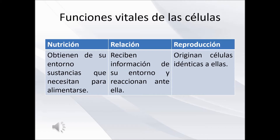A pesar de su tamaño microscópico, las células realizan tres funciones vitales. La primera: nutrición. Obtienen de su entorno las sustancias que necesitan para alimentarse. Por ejemplo, las células de nuestro organismo consiguen estas sustancias de la sangre. Relación: reciben información de su entorno y reaccionan ante ella. Por ejemplo, las células que forman el tejido muscular pueden contraerse al recibir una señal del sistema nervioso.